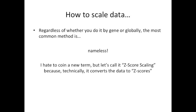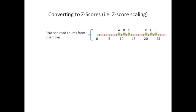Now we're going to talk about how to scale the data. Regardless of whether you do it by gene or globally, the most common method is nameless. I hate to coin a new term, but let's call it z-score scaling, because technically it converts the data to z-scores. Here's how to do it. Let's talk about converting to z-scores. In this example, we have RNA-seq read counts from six samples.